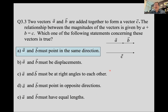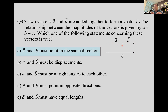If the magnitudes of the vectors just add, it's like moving along a number line — so those vectors have to be parallel to each other; they have to point in the same direction. If all of the magnitude of A plus all of the magnitude of B gives all of the magnitude of C, then A and B must be parallel, so you're not losing any distance by going off in a different direction. If A and B pointed in slightly different directions, C would be shorter.